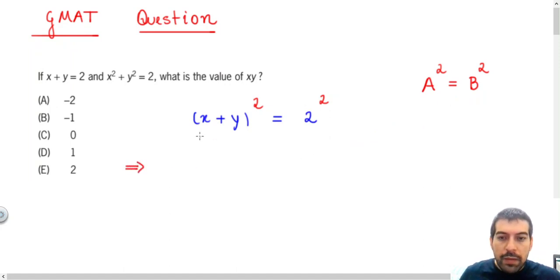So if I have x plus y squared, in fact, using the property of factorization here, we have that this is the same thing as x squared plus 2 times xy...